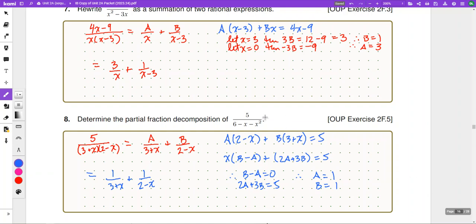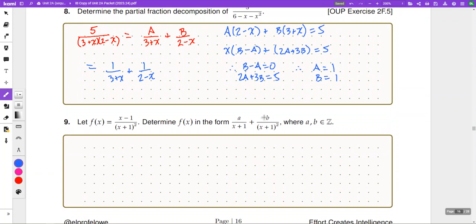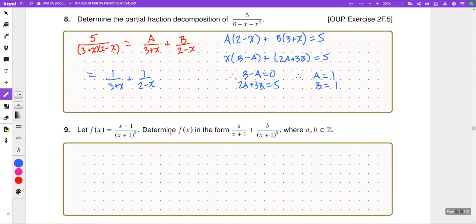And so, our last example for the level that you need to understand is the following. Here's f of x. And we want to determine f of x in this form. So, what's nice is they're already giving us this partial fraction decomposition. And we're being told that a and b are both integers.